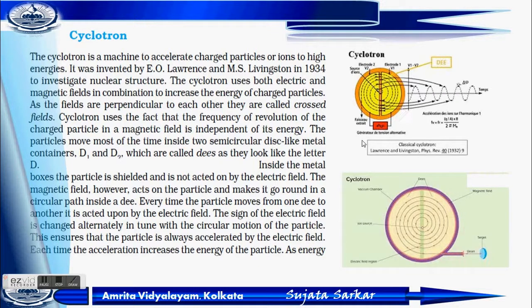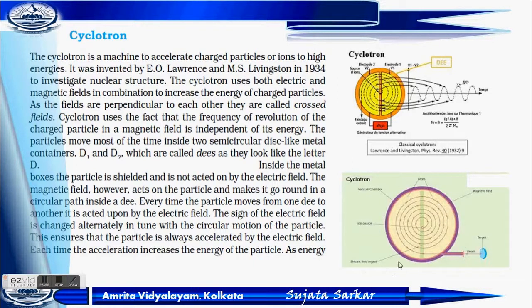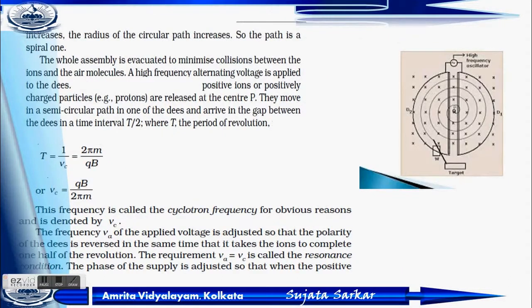There are two semicircular dees: D1 and D2. These are called Dees because they look like the letter D. Inside this metal box the particles are shielded and not acted on by the electric field. The magnetic field however acts on the particle to make it move in a circular path. The sign of the electric field is changed alternately, and the particle is always accelerated by the electric field. Each time, the acceleration increases the energy of the particle, and the circular path radius also increases.